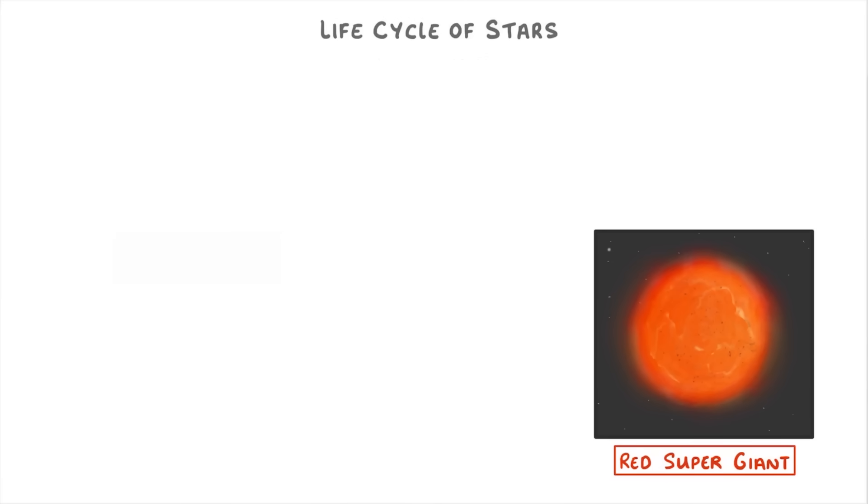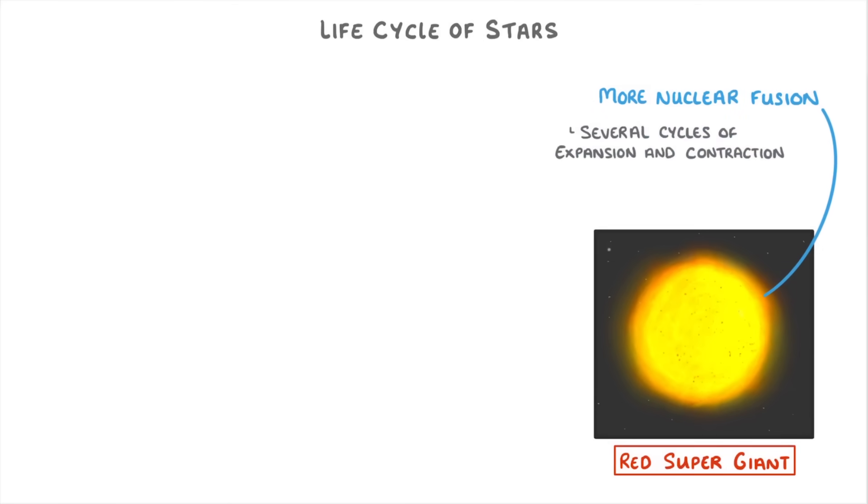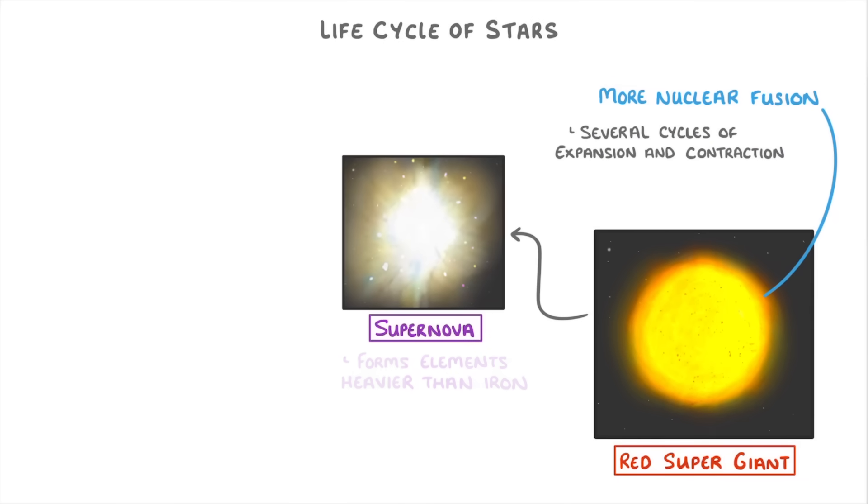Red supergiants actually start to shine brightly again, as they undergo even more nuclear fusion. After passing through several cycles of expansion and contraction though, they eventually explode in something called a supernova, which forms elements even heavier than iron that get ejected all across the universe.